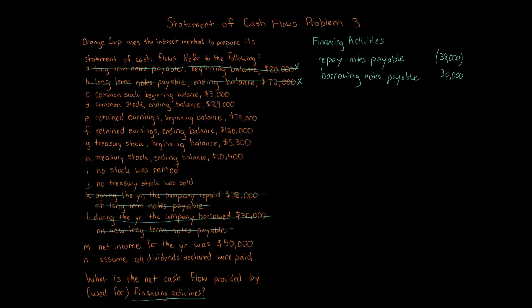We've finished liabilities. Now we're going to go over to the equity side. Since it's a corporation — Orange Corp — we're going to focus on stockholder's equity. First, focus on the paid-in capital side. I like to start with common stock. In items C and D we're told the beginning and ending balance of common stock, and in item I we're told no stock was retired.